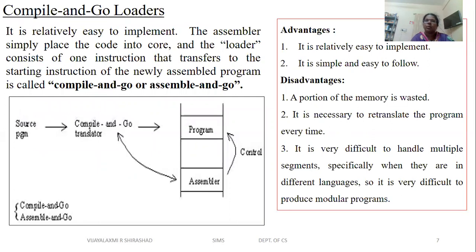Compile and go loader: it is relatively easy to implement. The assembler simply places the code into the core, and the loader consists of one instruction that transfers to the starting instruction of the newly assembled program — called compile and go, or assemble and go. The compiled code is directly moved towards memory with the help of the loader.